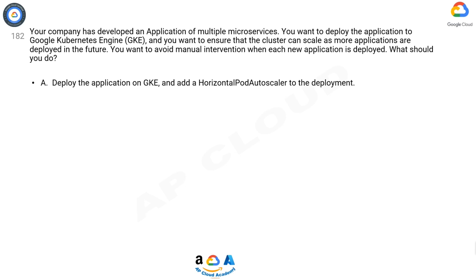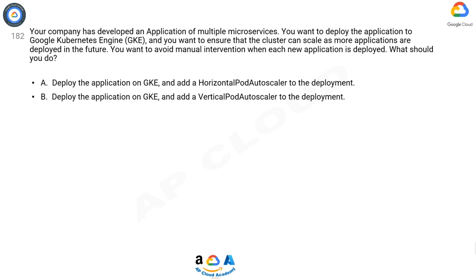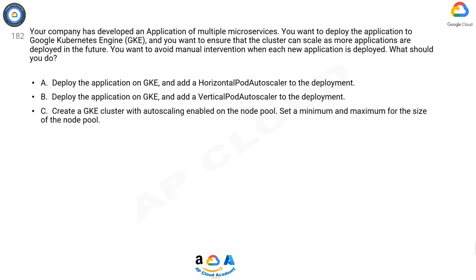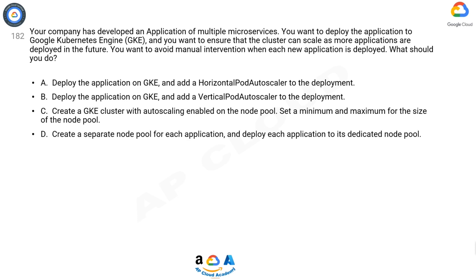A. Deploy the application on GKE and add a horizontal pod autoscaler to the deployment. B. Deploy the application on GKE and add a vertical pod autoscaler to the deployment. C. Create a GKE cluster with autoscaling enabled on the node pool. Set a minimum and maximum for the size of the node pool. D. Create a separate node pool for each application and deploy each application to its dedicated node pool.